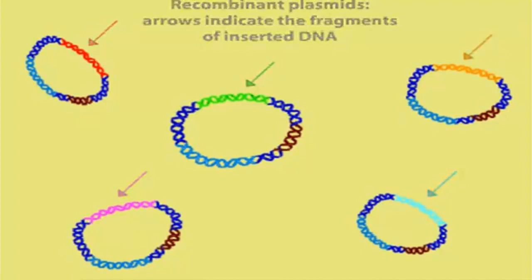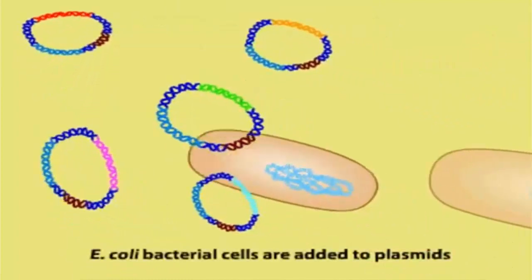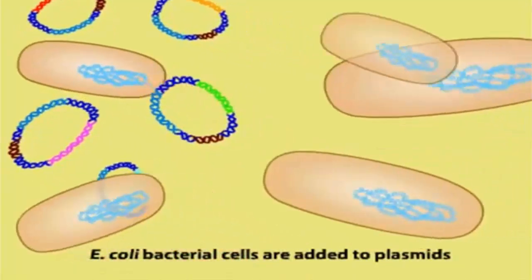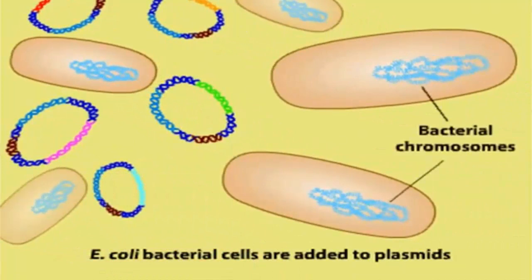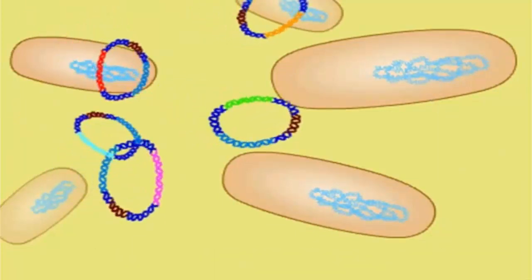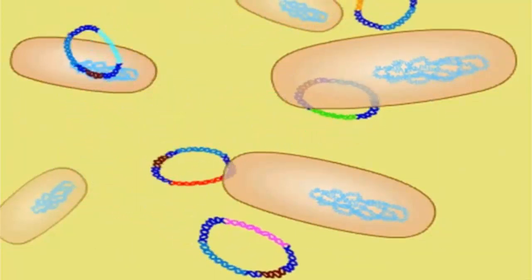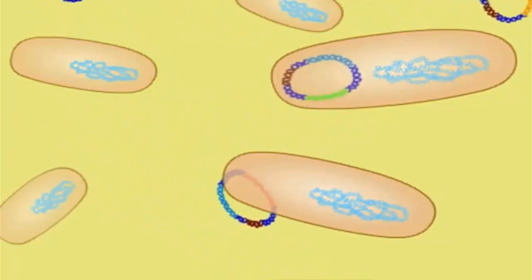Next, the host cells, E. coli bacteria, are added to the recombinant plasmids. The cells have been treated with calcium chloride to make them permeable to DNA molecules. Through a process called transformation, a few cells take up a recombinant plasmid, while most other cells do not.